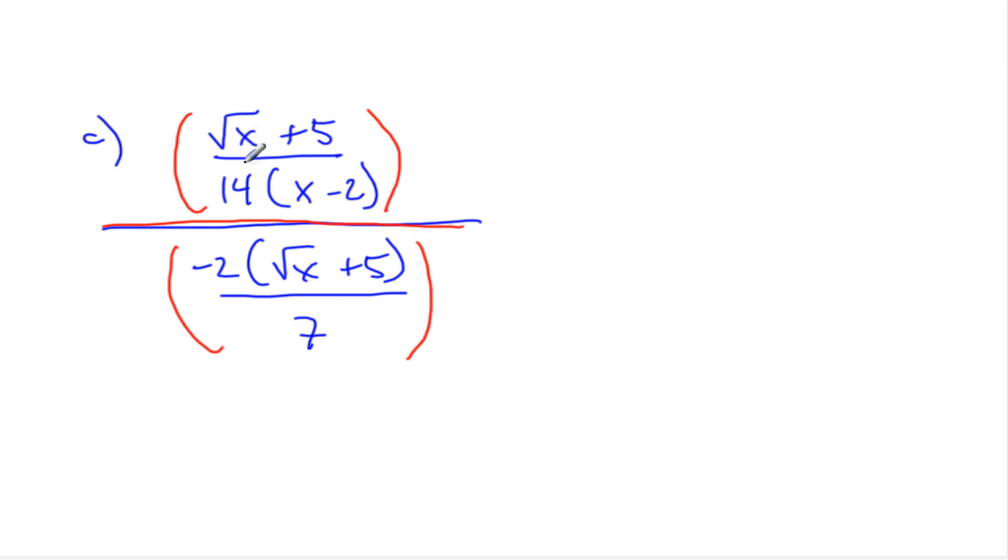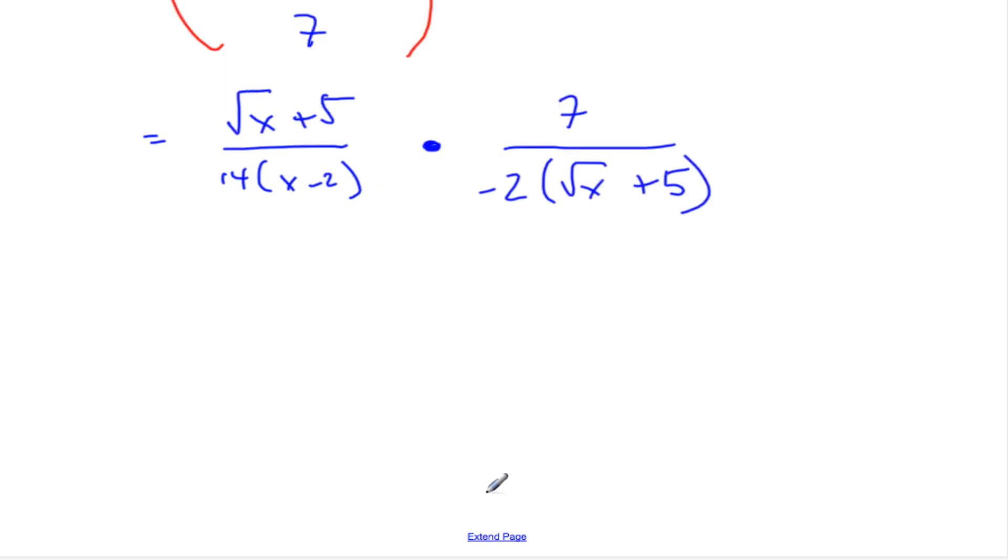So what I can do is I can change this from dividing. I can change it to multiplying. So I can say the top is square root x plus 5 over 14x minus 2. And I'm going to change it to multiplying. When I change it to multiplying, this bottom has to flip. Flip it over, reciprocal that baby. So I get 7 over negative 2 square root x plus 5. That looks nice. So we're down to two lines at least.